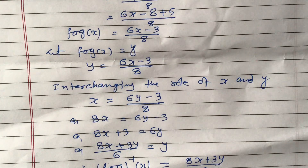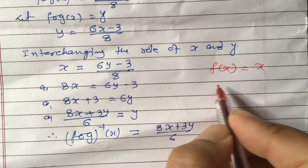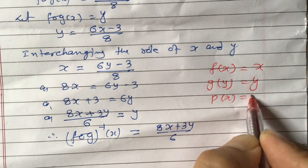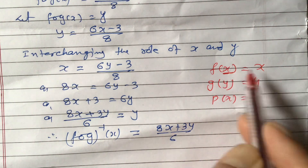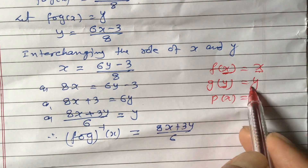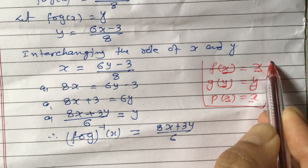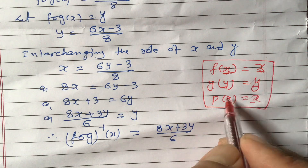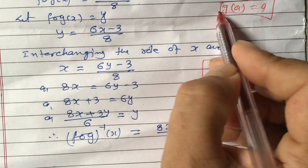Identity function means: if a function f(x) equals x, or if y equals y, it is an identity function. The element of domain and element of range are the same — the pre-image and image are the same. If pre-image and image of a function are the same, then it is an identity function. For example, f(x) = x, or p(x) = x, or g(a) = a — all are identity functions.